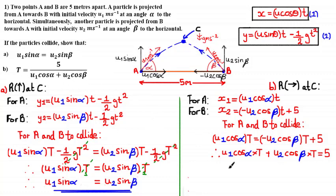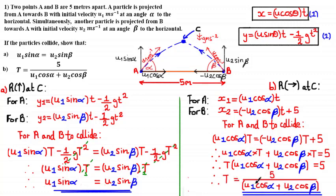Taking a glance at the equation we're trying to prove, we're almost there. We just need to make t the subject. Since both terms on the left share a common factor of t, factorising gives t(u₁ cos α + u₂ cos β) = 5. Dividing both sides by (u₁ cos α + u₂ cos β) gives t = 5 / (u₁ cos α + u₂ cos β), which is what we were looking to prove. Hope that was useful — keep up the good work and I'll see you soon.